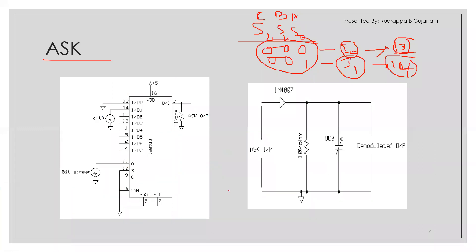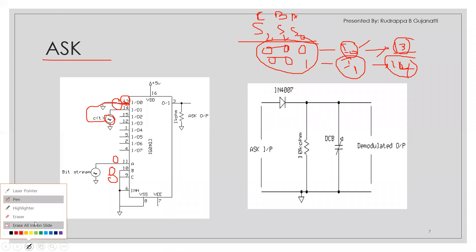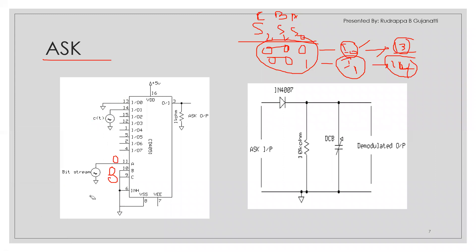For FSK, there is only a minor change from ASK. S2 and S1 are always zero; only S0 changes. When S0 is zero, pin 13 is selected — so a low-frequency carrier signal is applied to pin 13. When S0 is one, pin 14 is selected — so a high-frequency carrier is applied to pin 14. This is the modification: instead of one carrier, two carrier signals of different frequencies are used, one for logic zero and one for logic one.